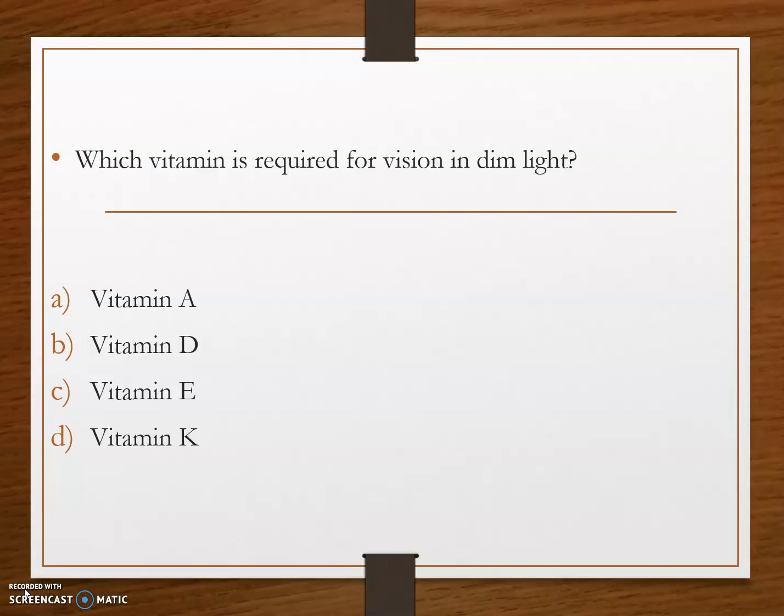Next question: which vitamin is required for dim light vision? Options are: option A, vitamin A; option B, vitamin D; option C, vitamin E; and option D, vitamin K. The answer is option A, vitamin A. Retinaldehyde is required for vision in both dim and bright light.